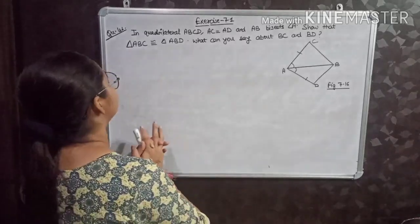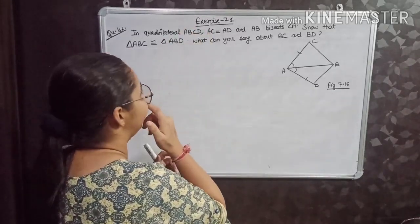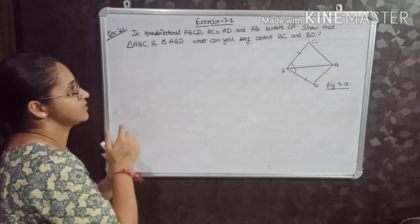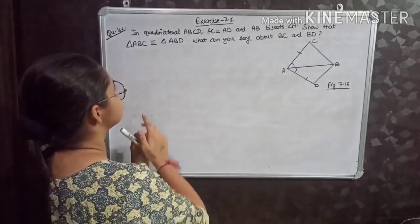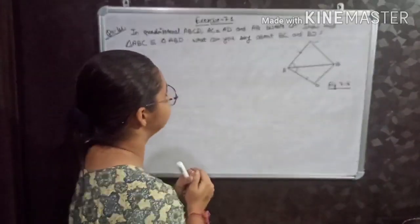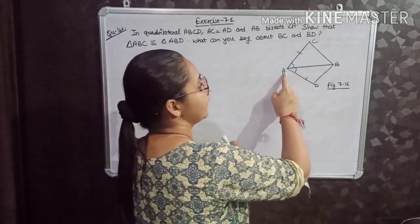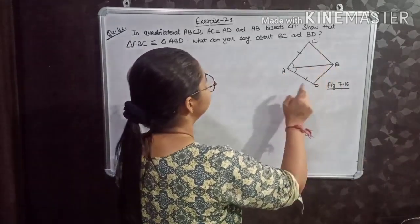Here is question 1 of Exercise 7.1 — the very first question of this chapter — that is, in quadrilateral ABCD.